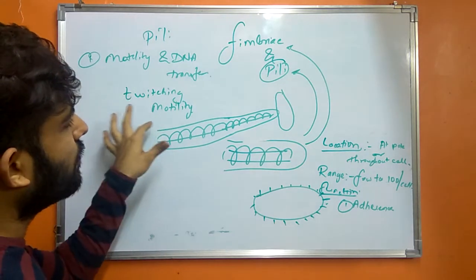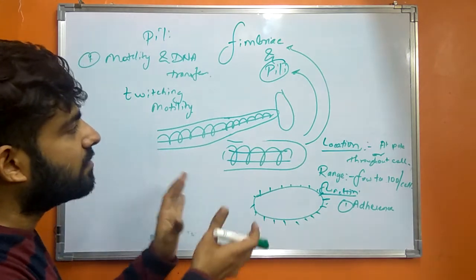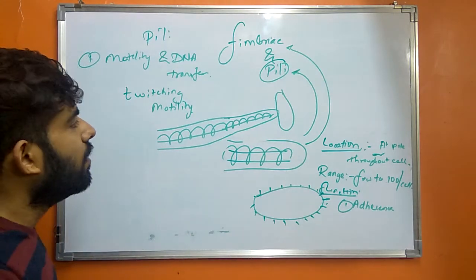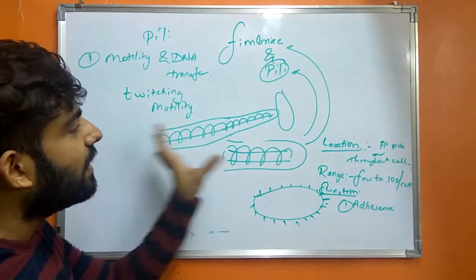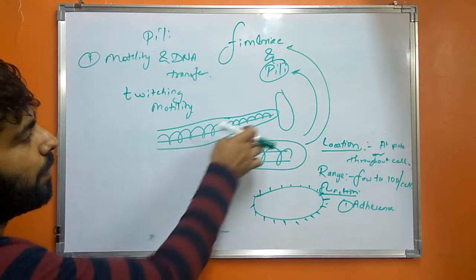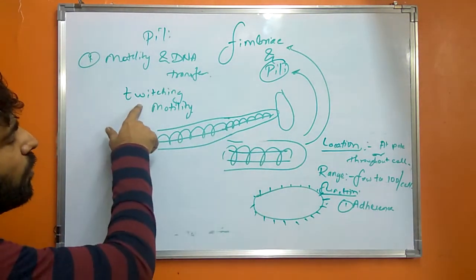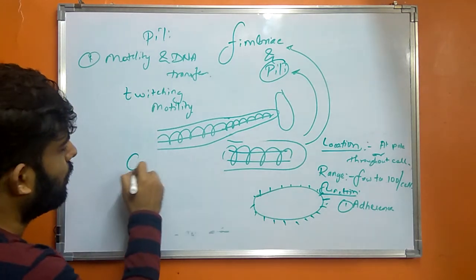This is twitching motility. It is generally due to the assembly and the disassembly of the pilin protein, causing the extension and the retraction of the Pilli. This twitching motility is also known as grappling hook model.